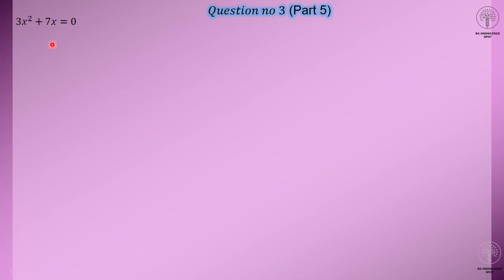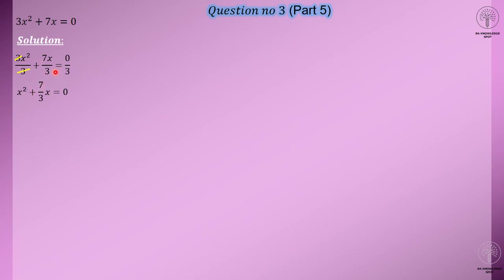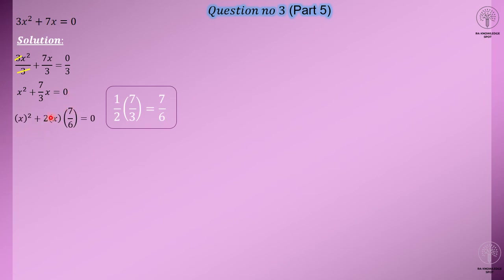Now moving to number 5: 3x squared plus 7x equals 0. Luckily, this is a very short question. You can see carefully there is no constant part in this question, so there is no need to shift any number to the other side — we can skip that step. Now we divide the whole equation by 3, since 3 is not a perfect square. After dividing: 3 cancels by 3, giving x squared plus 7 by 3 · x equals 0.